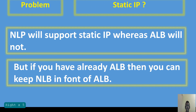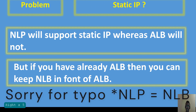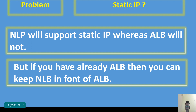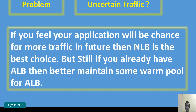The next problem: if your application needs to support a static IP, then there is no other option — you have to use the Network Load Balancer, because ALB does not support static IP.